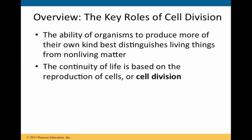Let's begin with a brief overview of the key roles of cell division. One of them is the ability of organisms to produce more of their own kind, and this is one of the ways that living things are distinguished from non-living things. Reproduction is a key role of cell division, and it's important to note that the continuity of life is based on the reproduction of cells — and that term is cell division.